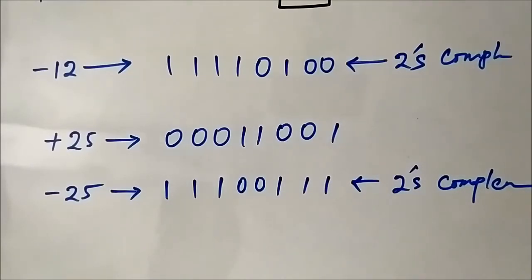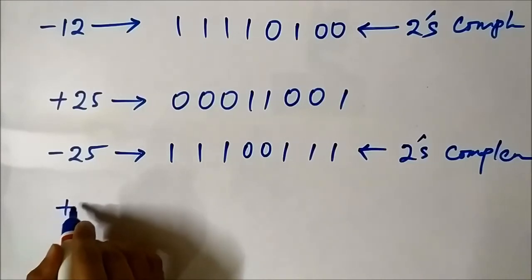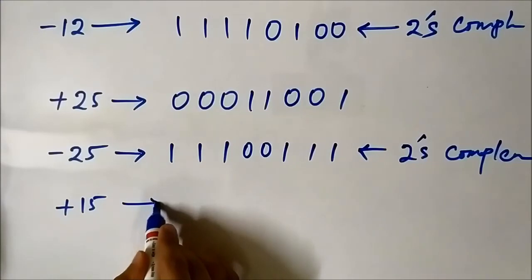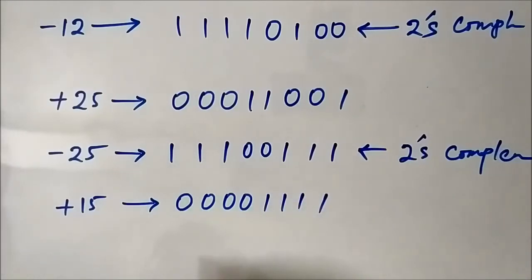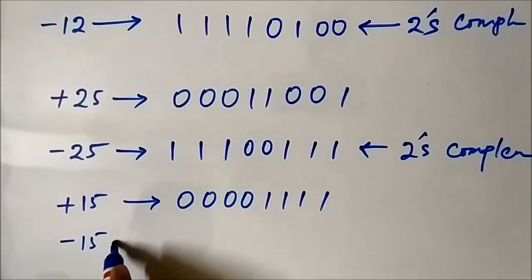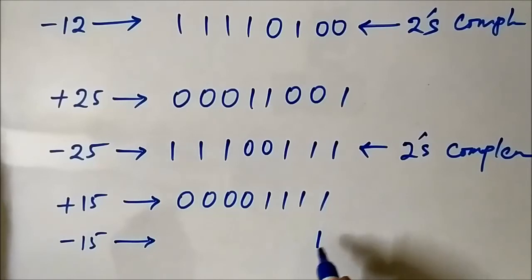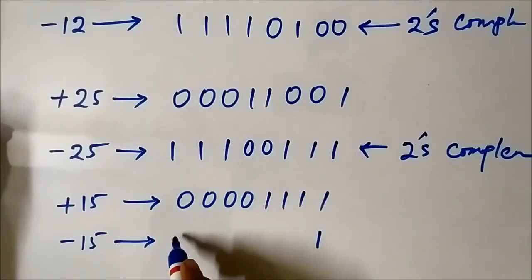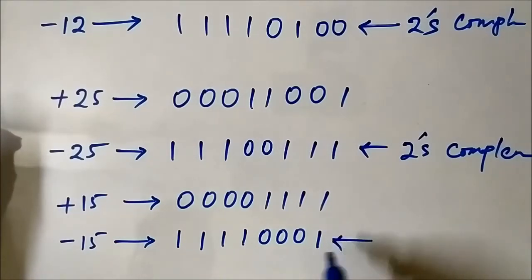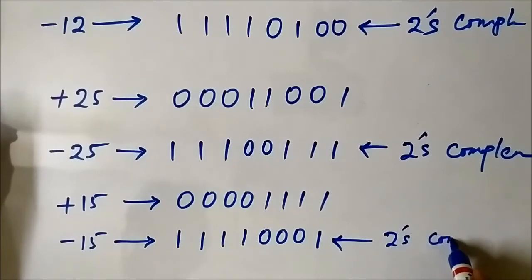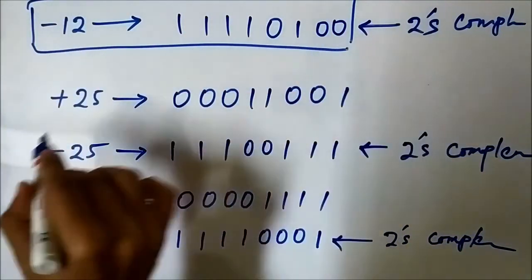Let's take another number: +15. In 8-bit format, +15 is represented as 00001111. For -15, we take the 2s complement: the first bit is 1, so we copy it as-is, then invert the remaining bits to get 11110001. This is the representation of -15 in the 2s complement system.